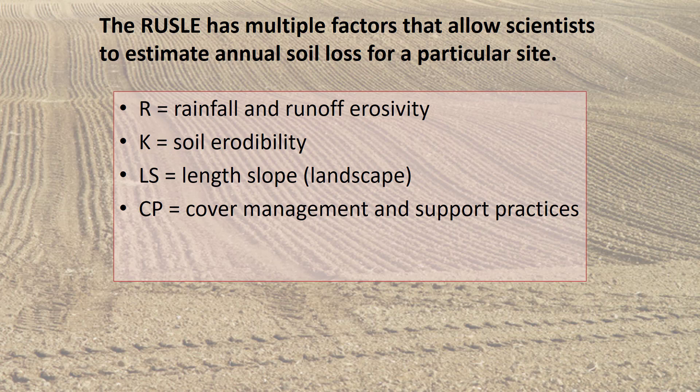C is the effect of cropping and management practices on erosion rates, while P is the impact of support practices on erosion. Canopy and surface cover protects soil from the impact of raindrops and slows surface runoff, decreasing erosion. Prior soil moisture affects rainfall's ability to soak into the soil — if soil is very wet, new rainfall will cause increased erosion from surface runoff. Prior land use can increase or decrease erosion depending on what the use was. Terracing, strip cropping, and contouring reduce erosion from runoff by impeding the flow of water downhill.